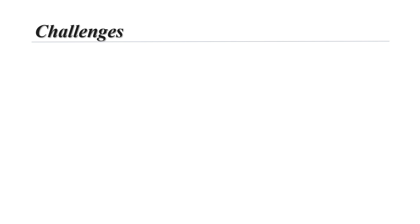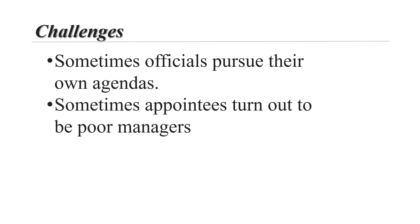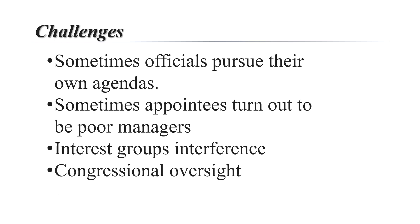Controlling the bureaucracy comes with some challenges for the president. While they do nominate department secretaries, sometimes these officials pursue their own agendas. Sometimes presidential appointees turn out to be poor managers and their agencies are unable to execute their duties optimally. Interest groups also have ongoing relationships with agencies and may try to shape agency agendas, interfering with presidential priorities. The president is also sometimes in competition with Congress over control of the bureaucracy through congressional oversight.